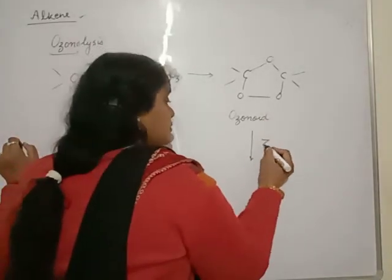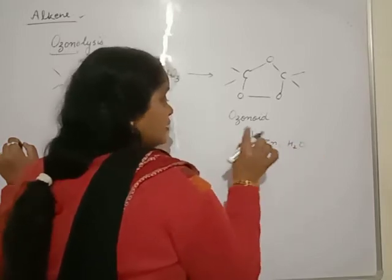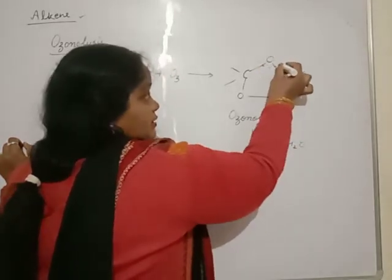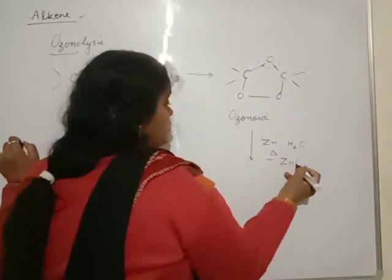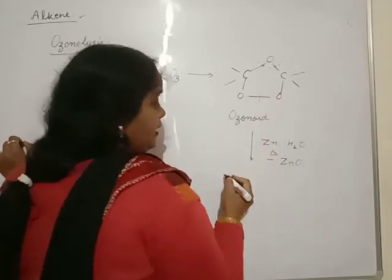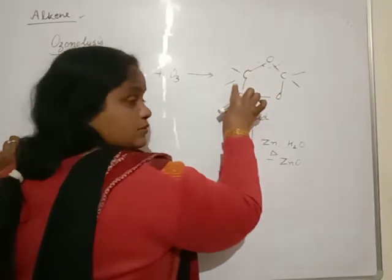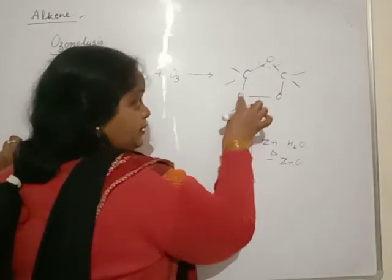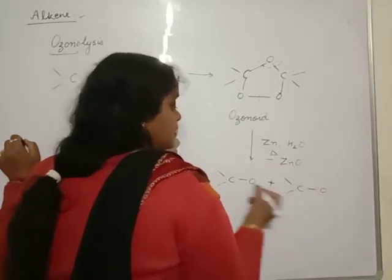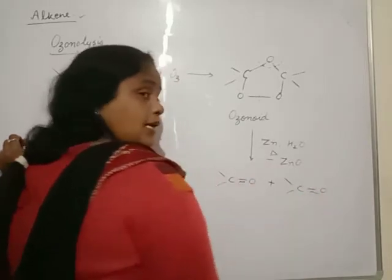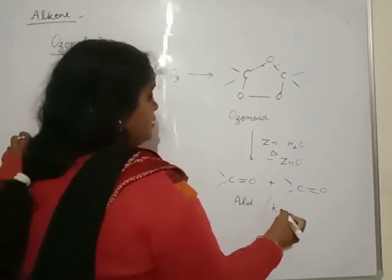And when this ozonide is heated with zinc dust, this zinc displaces this oxygen atom as zinc oxide and this bond will be broken. We will get double bond. Sorry, two bonds empty with carbon, one with oxygen. The other one also has the same. To complete the valence, we will apply double bond. They may be aldehyde or may be ketone.